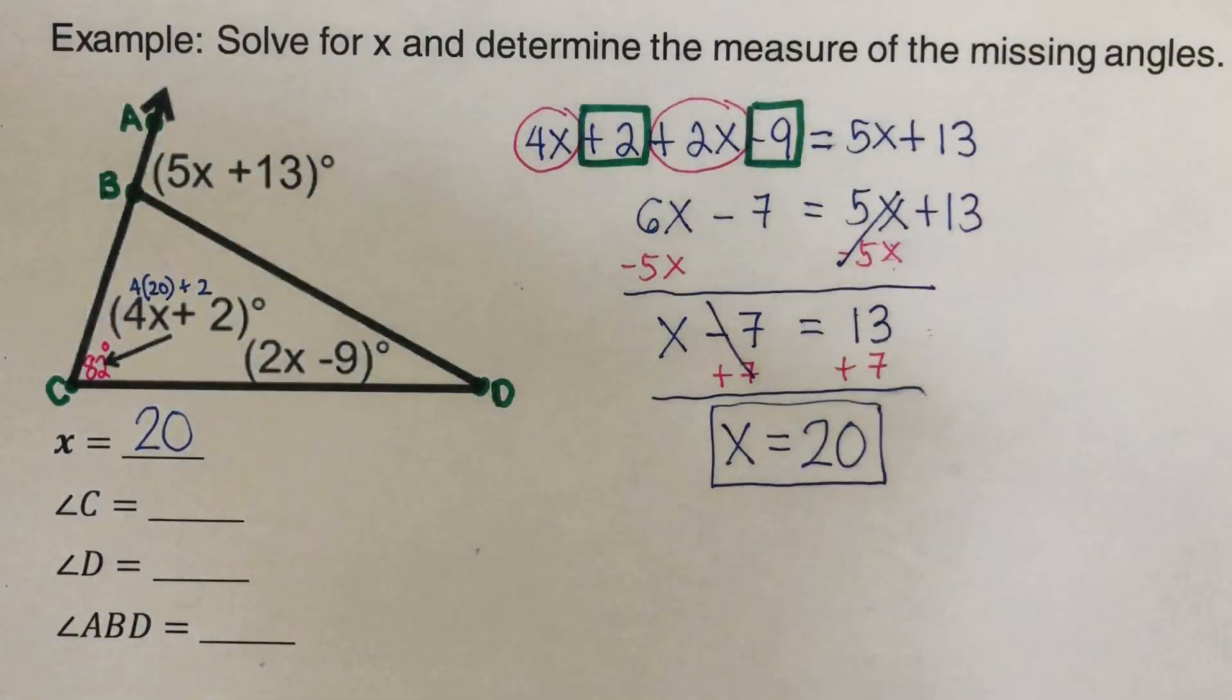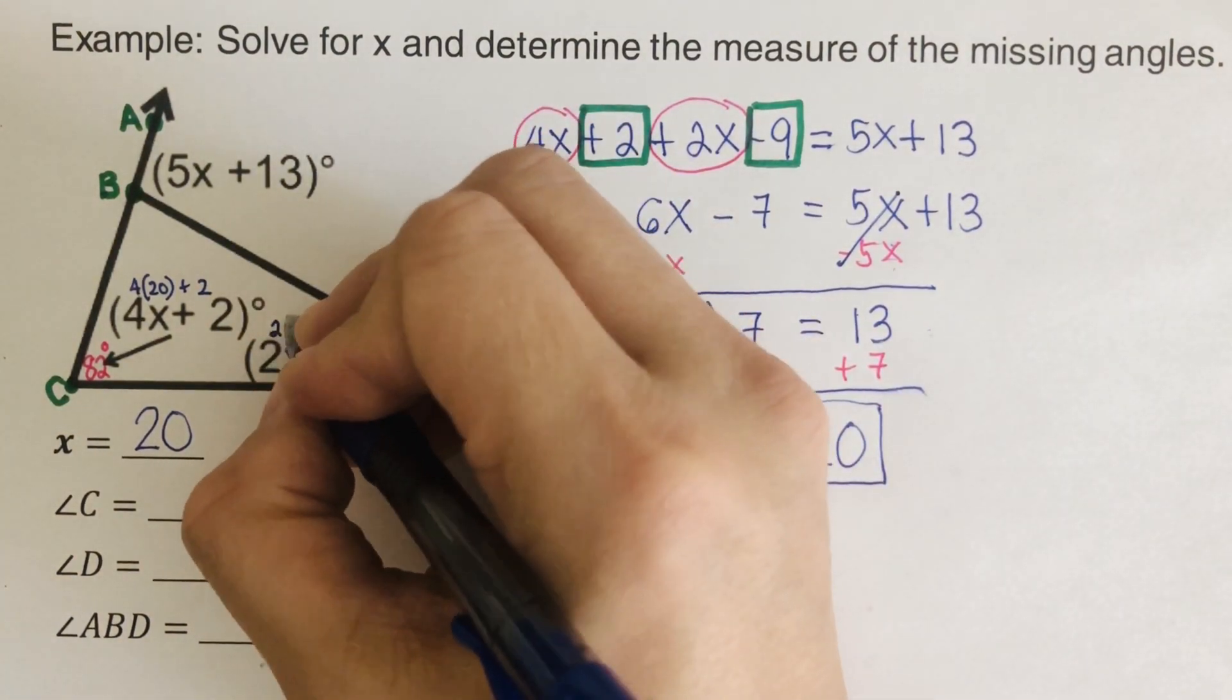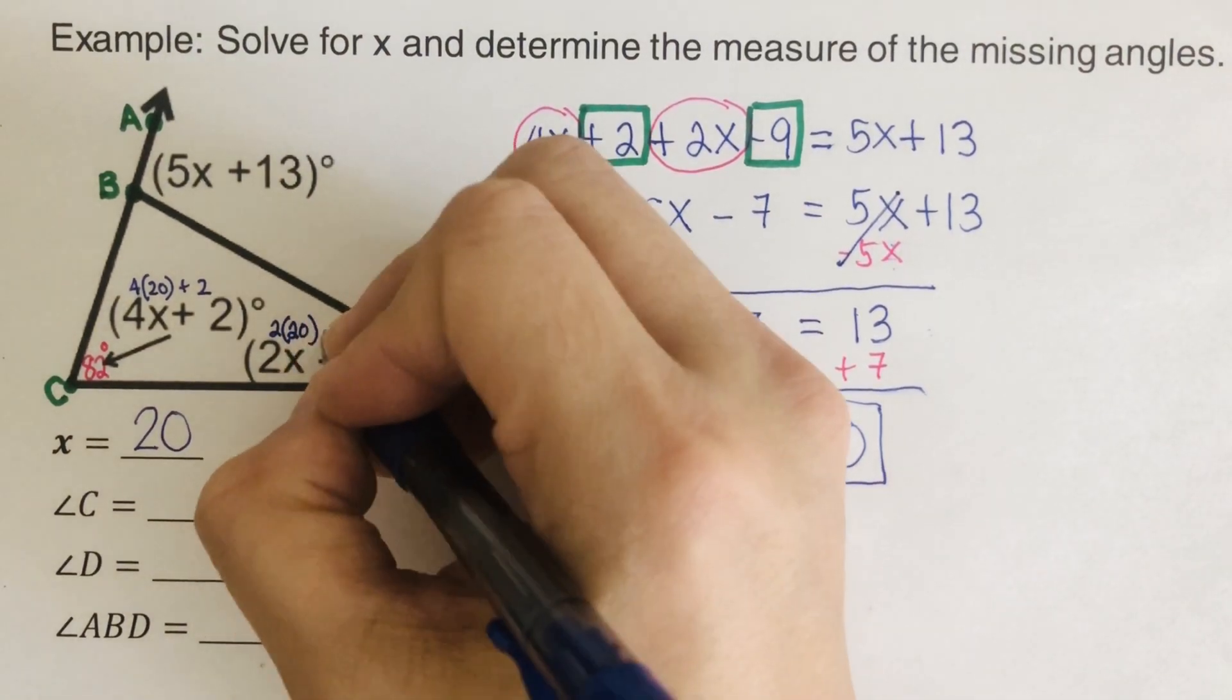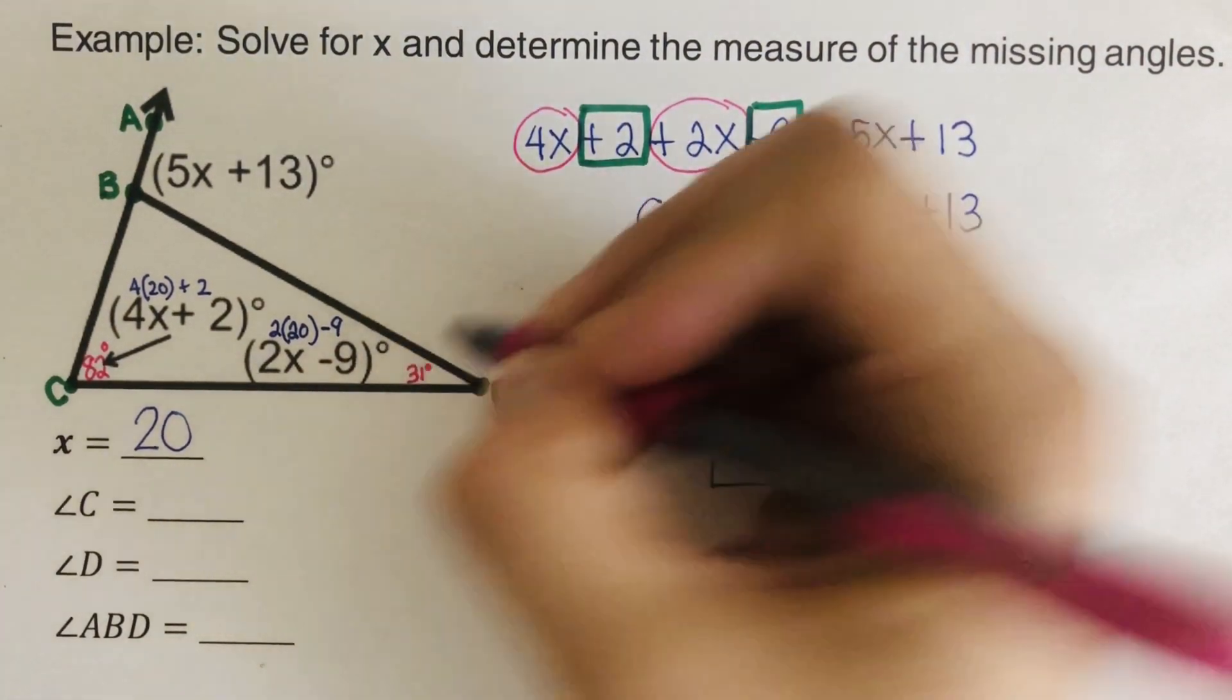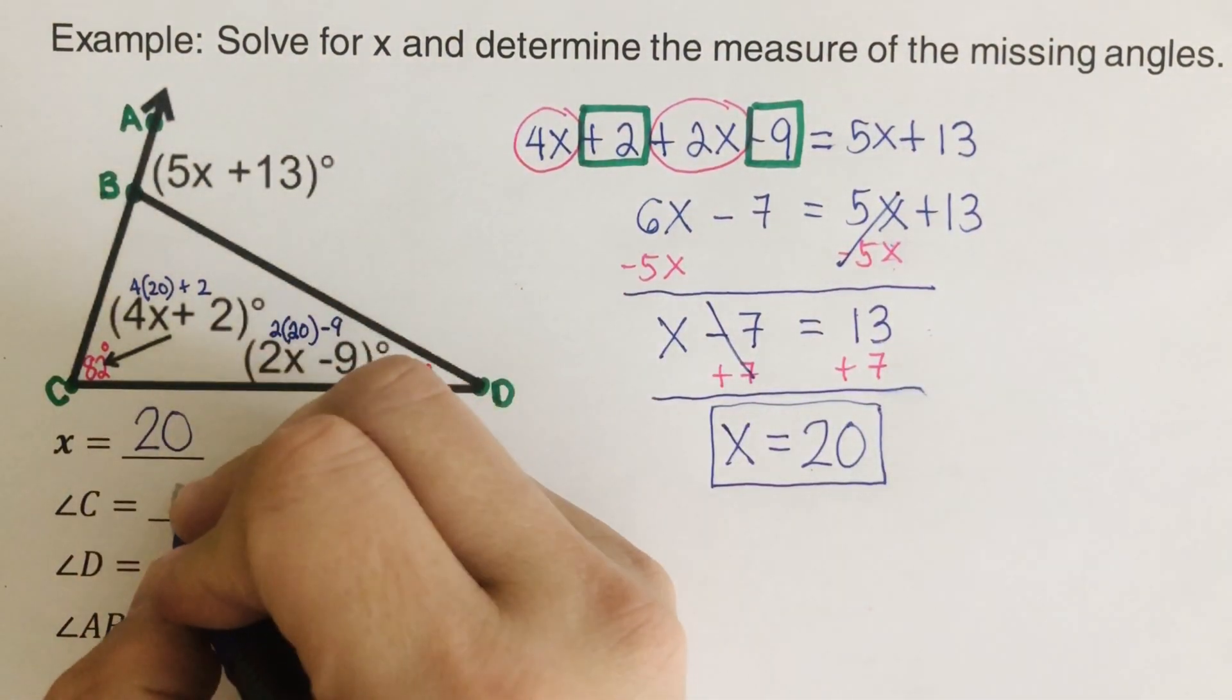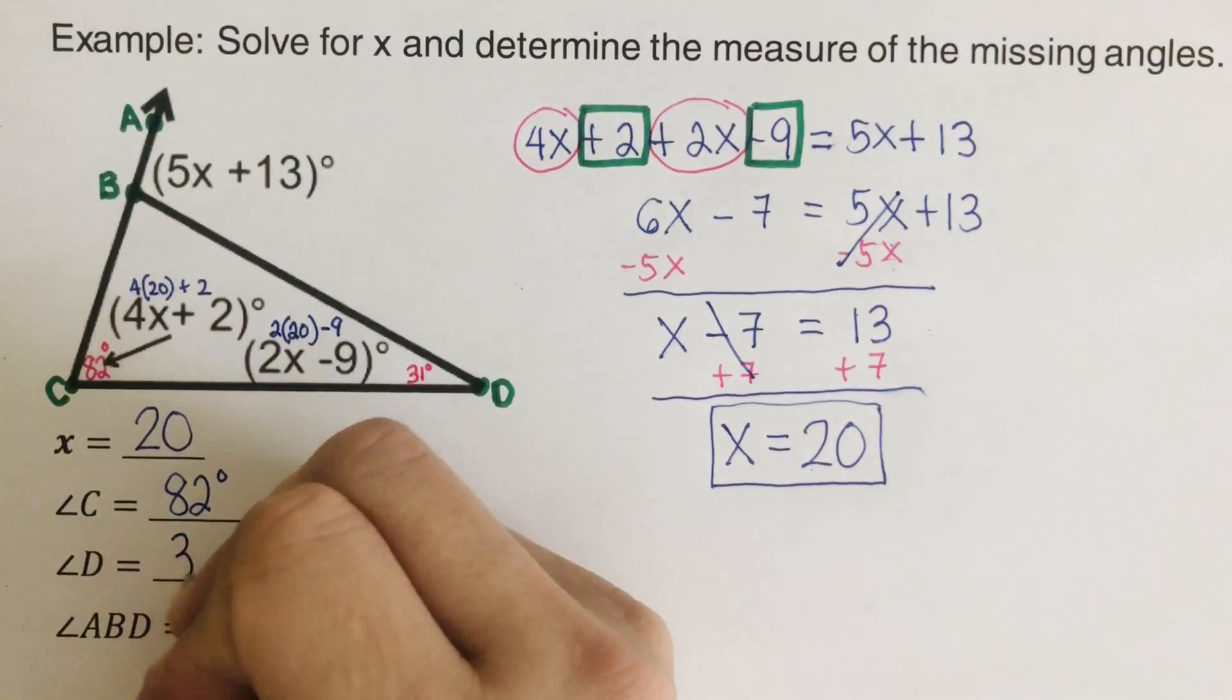And then I do the same thing for this other remote interior angle. So that would be 2 times 20 was the x. So 2 times 20 minus 9. 2 times 20 is 40. 40 minus 9 is 31 degrees. So I can go ahead and write angle C here is 82 degrees. Angle D is 31 degrees.